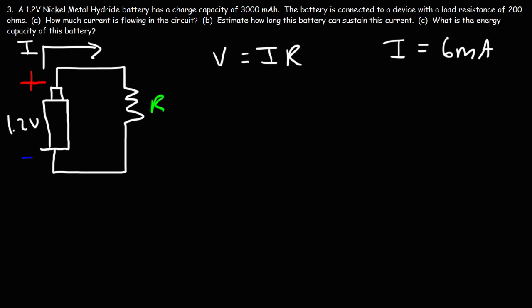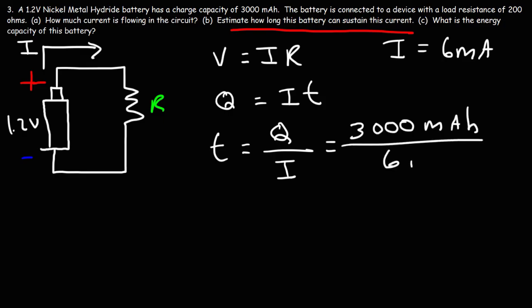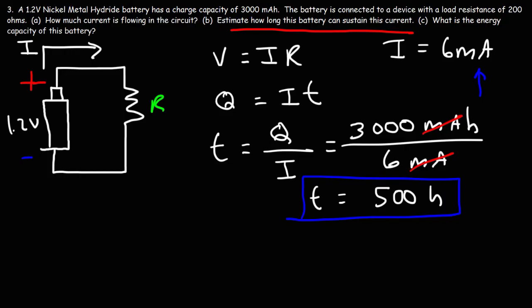Part B: Estimate how long this battery can sustain this current. Time equals charge capacity divided by current: 3,000 milliamp hours divided by 6 milliamps. The unit milliamps cancel. 3,000 divided by 6 is 500, so we get 500 hours as an estimate of how long this battery can sustain this current.